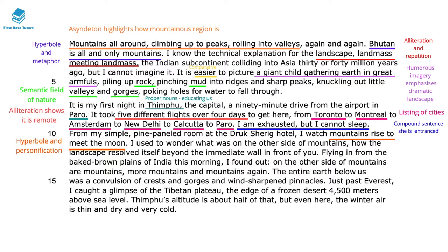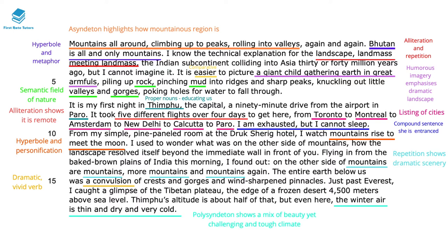'Mountains rise to meet the moon' — the hyperbole and personification here show just how large these mountains are. She repeats the word 'mountains' throughout, really making clear that this scenery is filled with dramatic peaks. She also uses the dramatic vivid verb 'a convulsion of crests and gorges' — these are sharp peaks forming the horizon of Bhutan, not soft gentle hills. Finally, 'the winter air is thin and dry and very cold' uses polysyndeton, in contrast to the asyndeton that opens the passage. Polysyndeton is when there are lots of conjunctions, and here it conveys a mix of the beauty of the landscape alongside how challenging and tough the climate is.